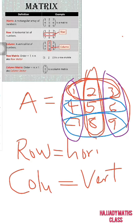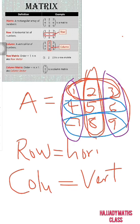Moreover, there is a need for you to understand what we mean by the order of a matrix. A matrix surely has an order. The example of this is a 3 by 3 matrix. How do we determine the order of the matrix? You can see from here that we have 3 rows — this is the first row, the second row, and the third row. That means we have 3 rows.